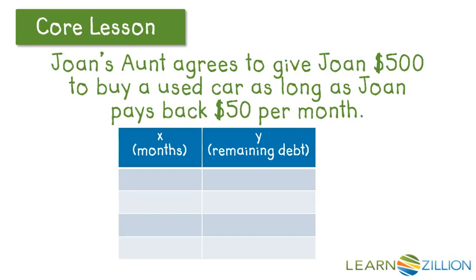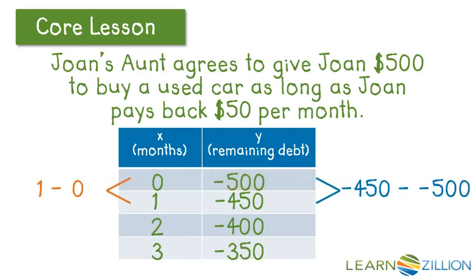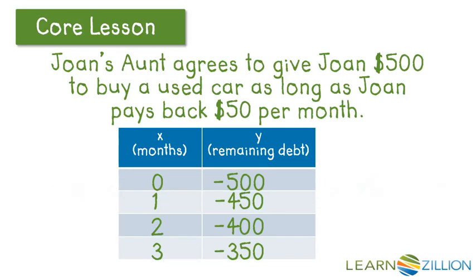Now we're going to look at building the numeric representation. At zero months, she hasn't paid anything back, so she still owes $500. At one month, she's paid back $50. At two months, she's paid back $100 so far. At three months, she's paid back $150. The y-intercept is negative 500, and we can use subtraction of consecutive values to find out what the slope is.